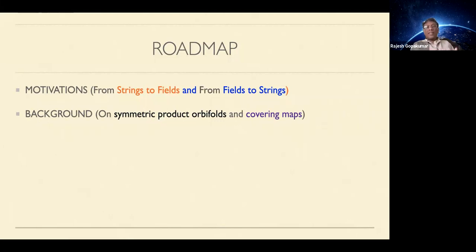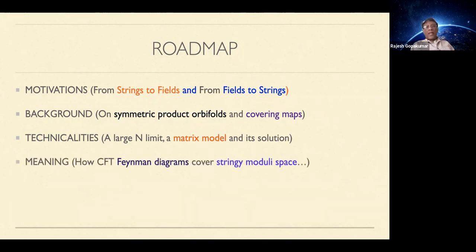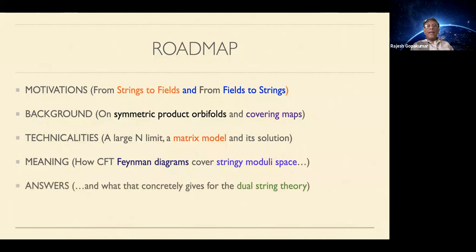We'll then focus on a very specific context for which I'll need to give some background on the so-called symmetric product CFTs and the covering maps that will appear in that context. Then I will focus on the work we actually did — the technical heart of the paper — which involves a calculation in a large-N limit and a corresponding matrix model and its solution. I'll explain what this calculation means and why it naturally gives a way to go from Feynman diagrams of the CFT to a string theory moduli space, and close with some outlook.